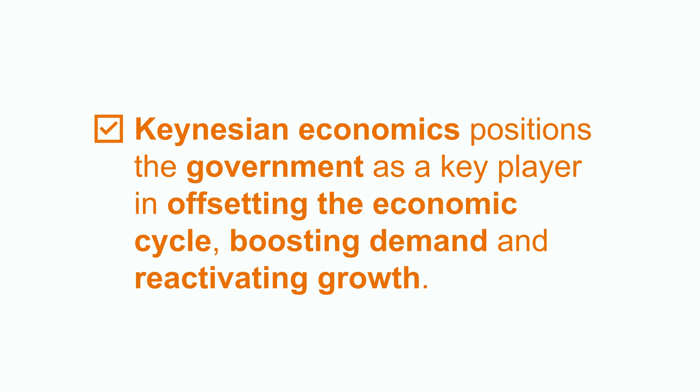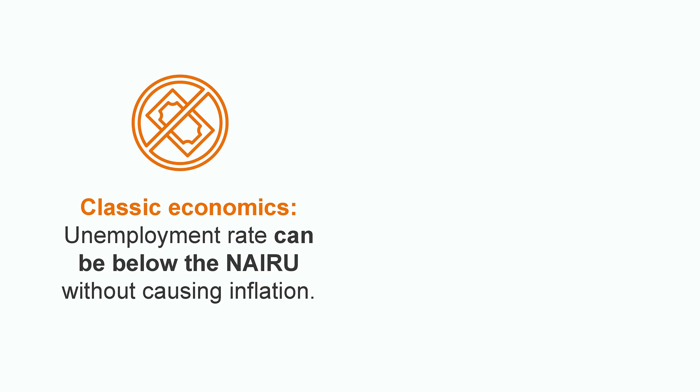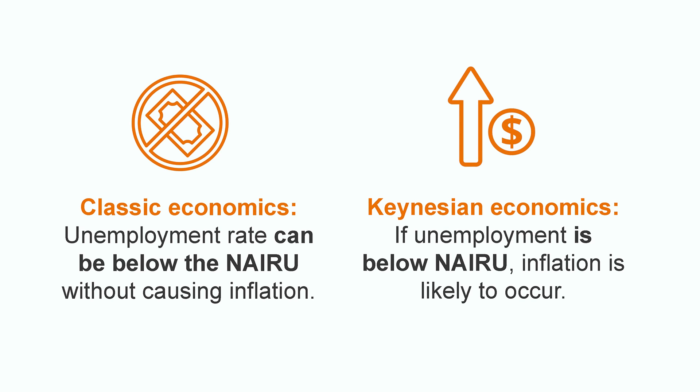This concept was developed by Keynesian economics, which positioned the government as a key player in offsetting the economic cycle, boosting demand, and reactivating growth. According to Keynesian economics, the government should monitor unemployment so that it remains above the natural rate. Some governments base their decisions on this rate when deciding how much to stimulate the economy and how seriously to take inflation. The classical theory says unemployment can be below the natural rate without causing inflation; however, Keynesian economics holds that inflation is likely to occur if unemployment falls below the natural rate. Keynesians advise governments to stimulate the economy if unemployment rises significantly above it, as this causes the economy to stagnate.